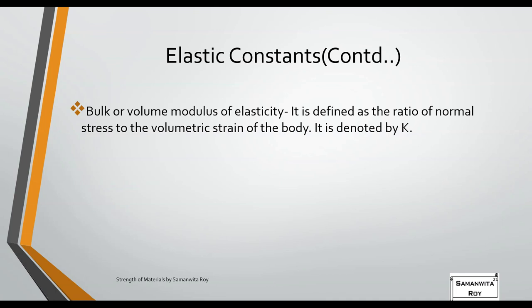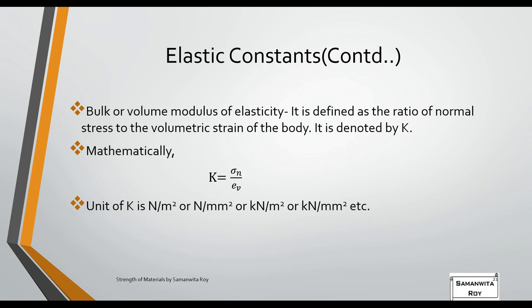The third elastic constant is the Bulk Modulus or Volume Modulus of Elasticity, defined as the ratio of normal stress to volumetric strain. It is denoted by K. Mathematically: K = σ_n / e_v, where σ_n is normal (tensile or compressive) stress and e_v is volumetric strain. The unit of K is again the same: newton per meter square, newton per mm square, kilonewton per meter square, or kilonewton per mm square.